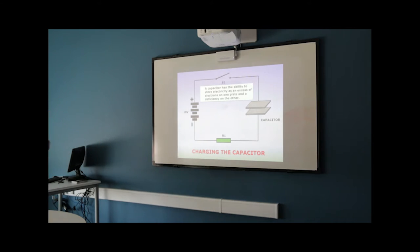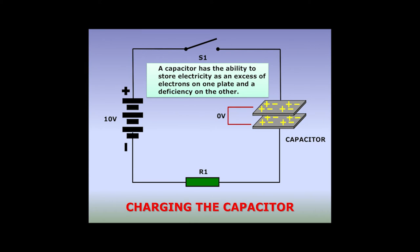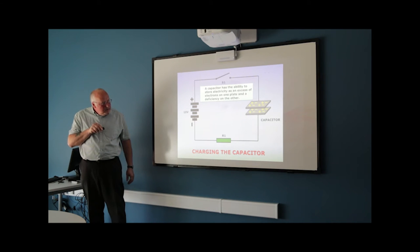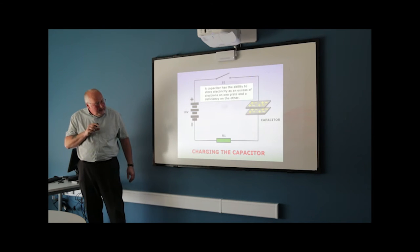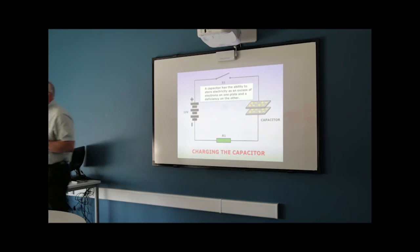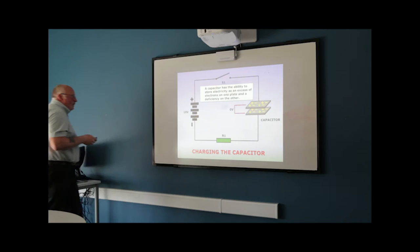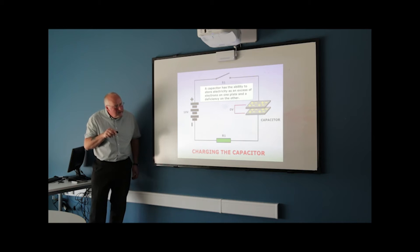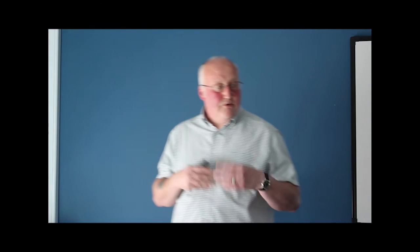A capacitor requires some form of charging supply to store charge. With no supply connected, it is electrically neutral — the number of protons equals the number of electrons on each plate. If we measured the potential difference between the two plates it would be zero; there is no charge, therefore no potential difference.